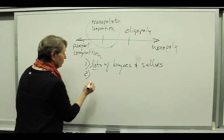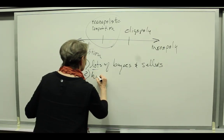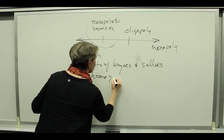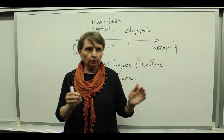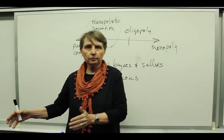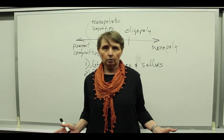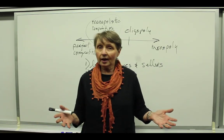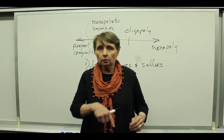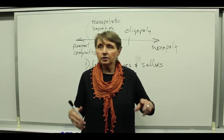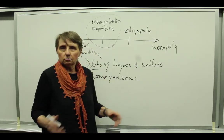The second criteria is the product has to be homogeneous. That means you cannot tell Farmer Brown's wheat from Farmer Smith's wheat from Farmer Jones' wheat. A bushel of wheat is a bushel of wheat is a bushel of wheat — the product is identical. Not all markets are that way. A Big Mac and a Whopper and Wendy's are different — Wendy's has a square patty and McDonald's has the special sauce and sesame seeds. Not so with a bushel of wheat. So the product is homogeneous.